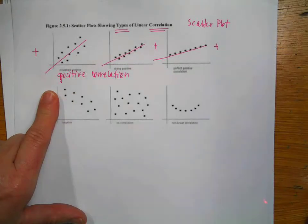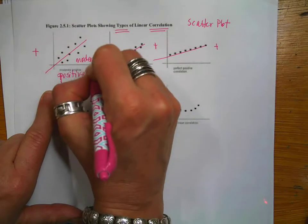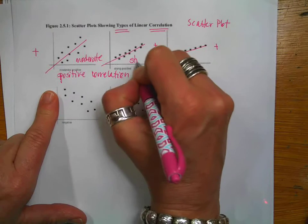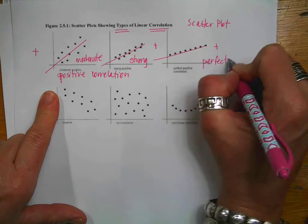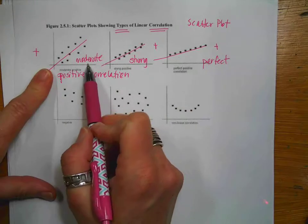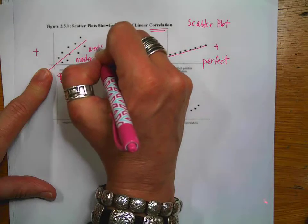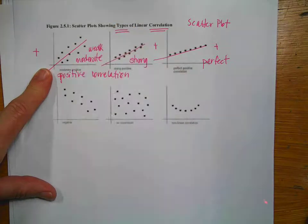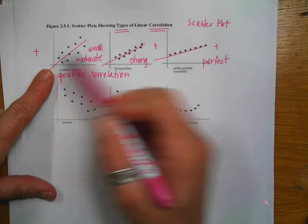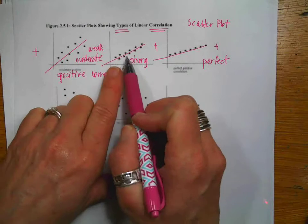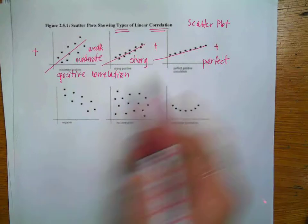And then we can add extra adjectives. This one says it's moderate. This one says that it is strong. And this one says that it is perfect. I might have called this one a moderate. I might have called it weak, meaning that the dots are close to my line, but not exactly on it. This is stronger. And then this is perfect because all of the dots are on the line.